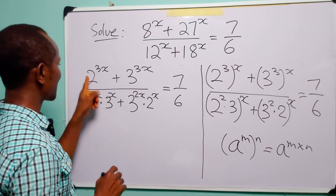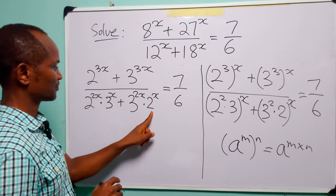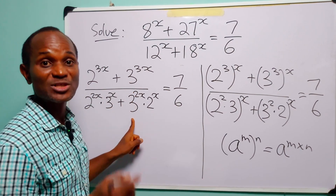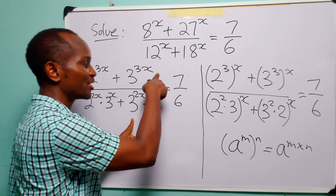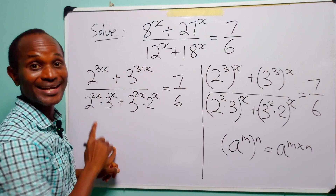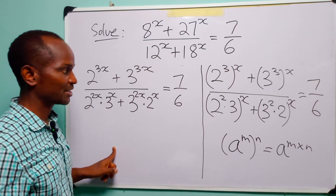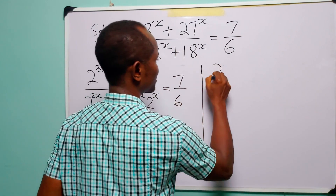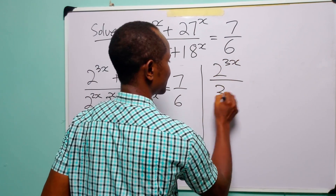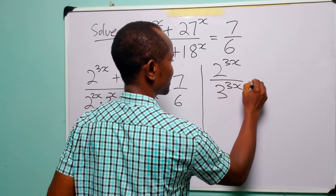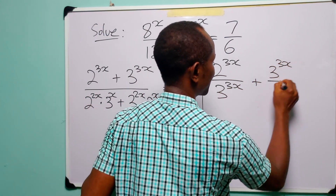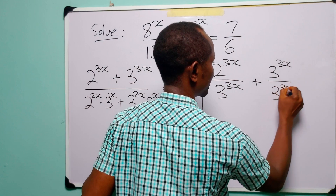So the next step in solving this equation will be to divide both the numerator and the denominator by 3 to the power of 3x. We have 2 to the power of 3x divided by 3 to the power of 3x, plus 3 to the power of 3x divided by 3 to the power of 3x.